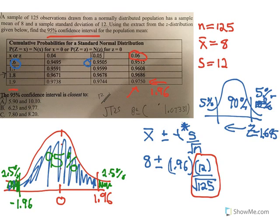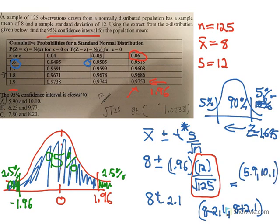And if we get that, if we calculate this, it's 8 plus or minus about 2.1, which means our interval is 8 minus 2.1 to 8 plus 2.1, which equals an interval of 5.9 to 10.1. And that's why option A is our answer.